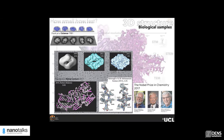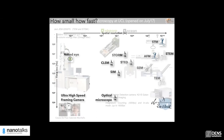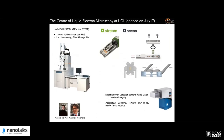Nowadays it's not only about how small can you image, but how fast. With the development of new detectors we can now acquire fast frame videos, which are needed for capturing dynamic processes. The Center of Liquid Electron Microscopy at UCL comprises a JEOL JEM 2200FS, a 200 kV FEG microscope with an in-column omega filter. We have two liquid holders from DEMS — the new generation stream holder and the first generation ocean holder. The work I'm going to present today was done with the ocean holder and a direct electron detection camera, the K2 in situ from Gatan, which allows low-dose imaging.